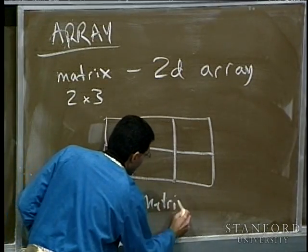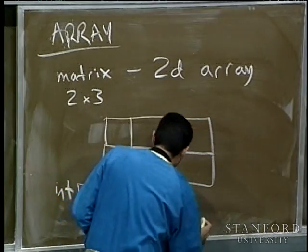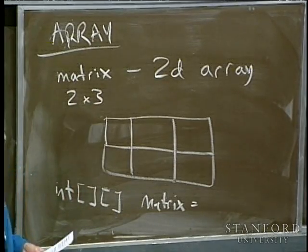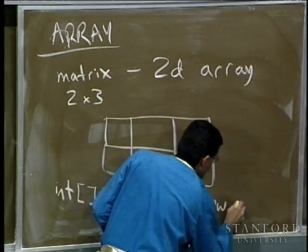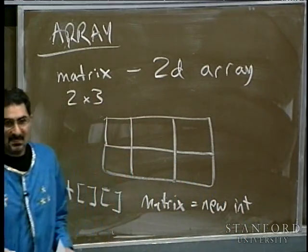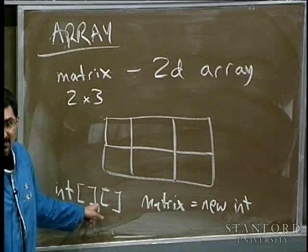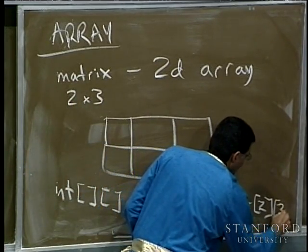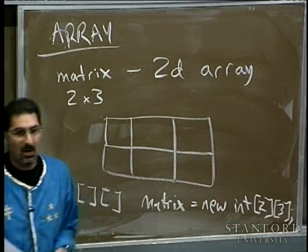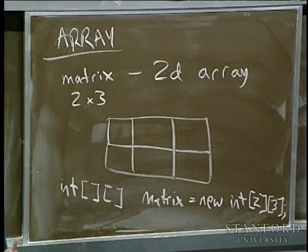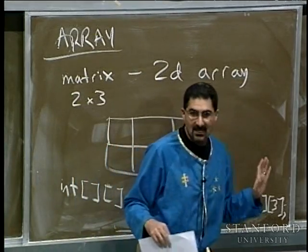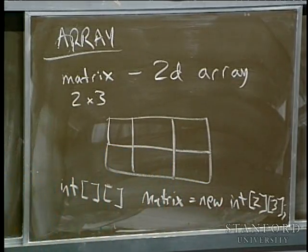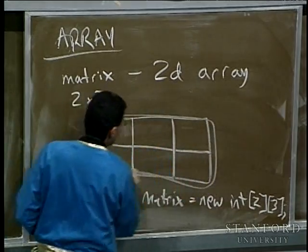To create a matrix, you specify the type you're going to store, and then as many pairs of square brackets as you have dimensions. For two dimensions — rows and columns — you specify two open and closed bracket pairs. If you wanted a cube, you'd have three. We give it a name like 'matrix', and then we specify the creation with 'new', the type like int, and a size for every dimension. For a two-by-three, we specify two in brackets, then three in brackets — no comma notation in Java.